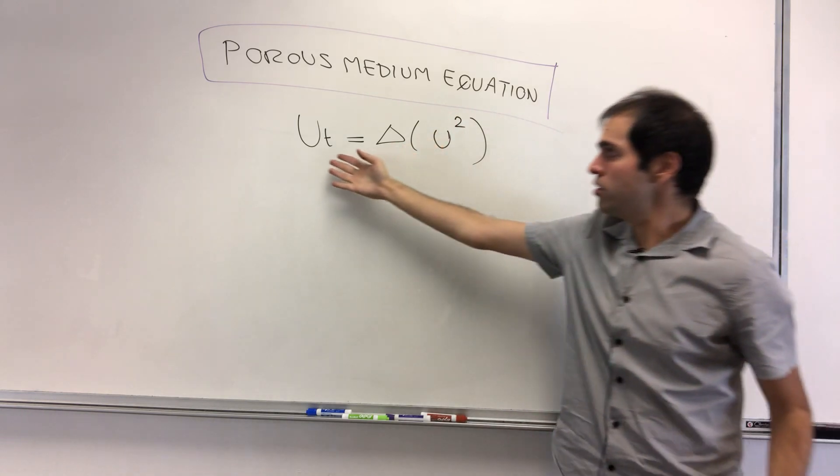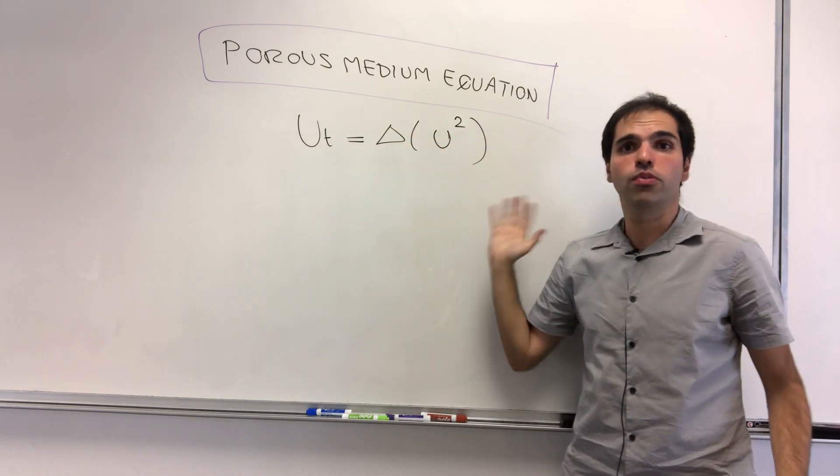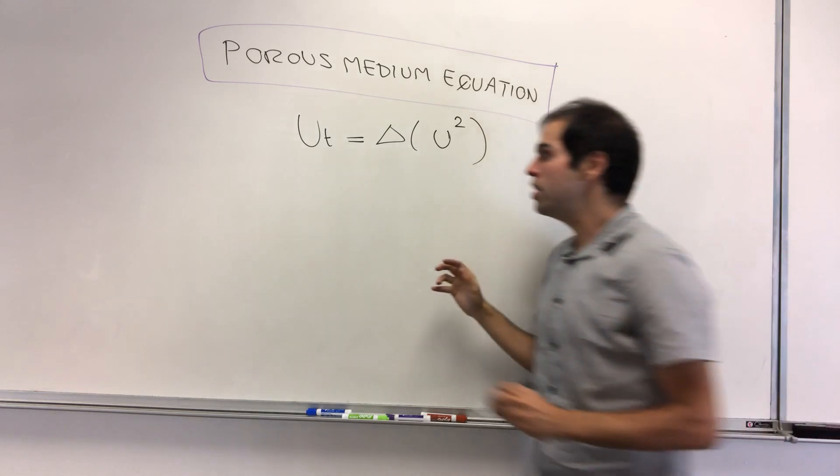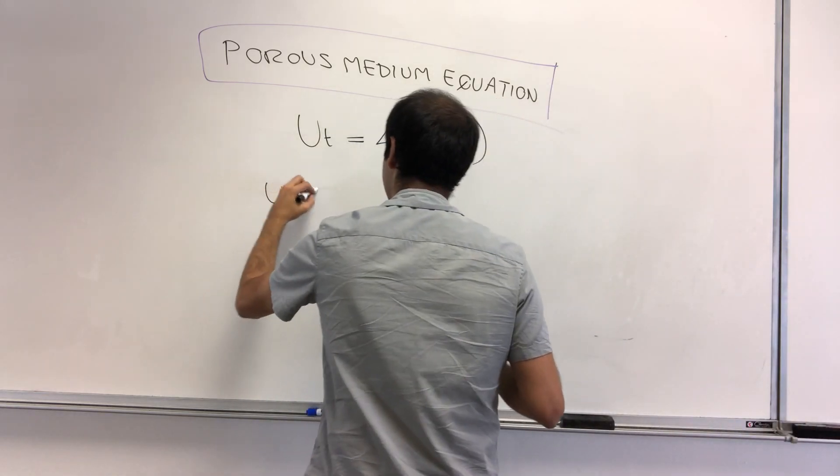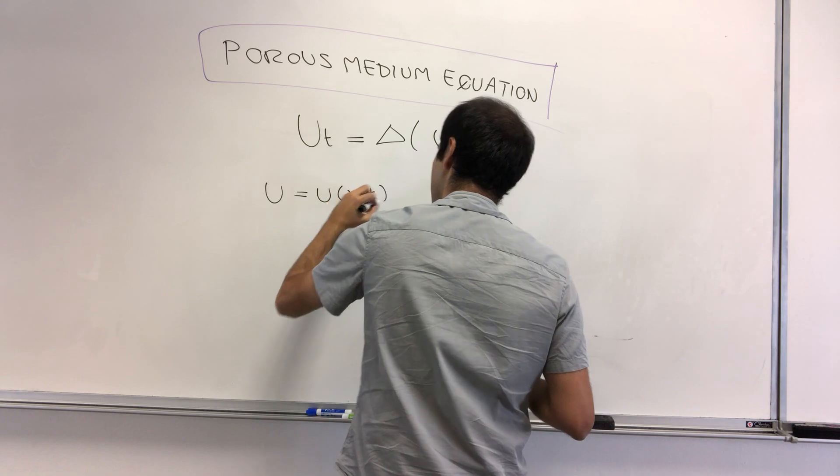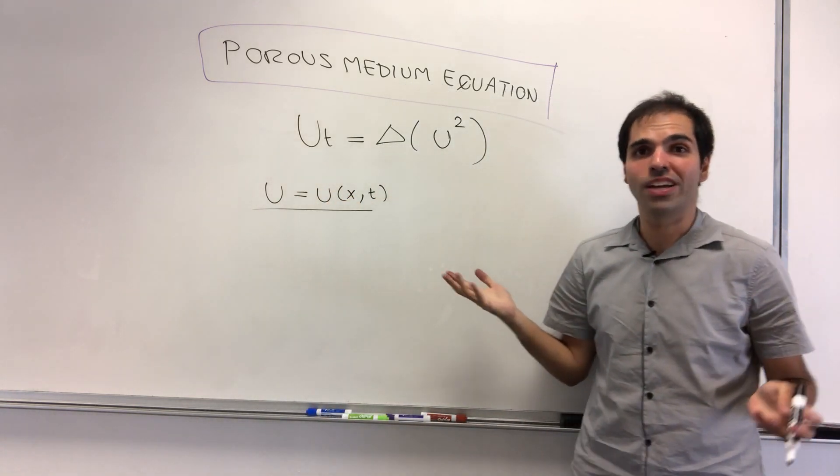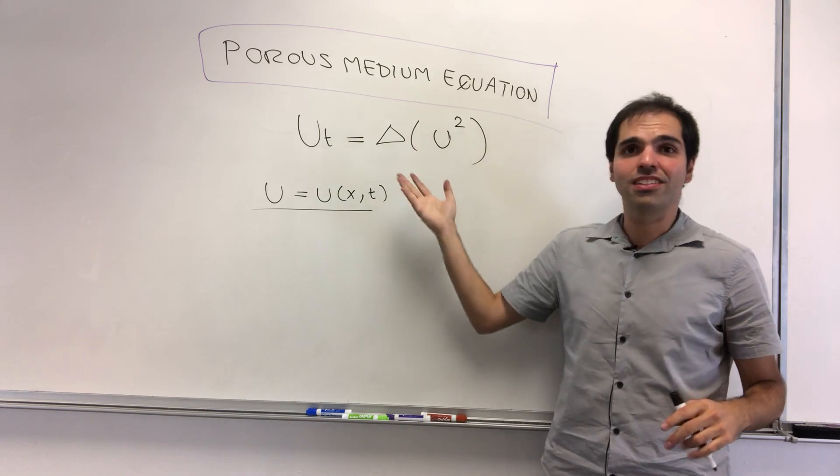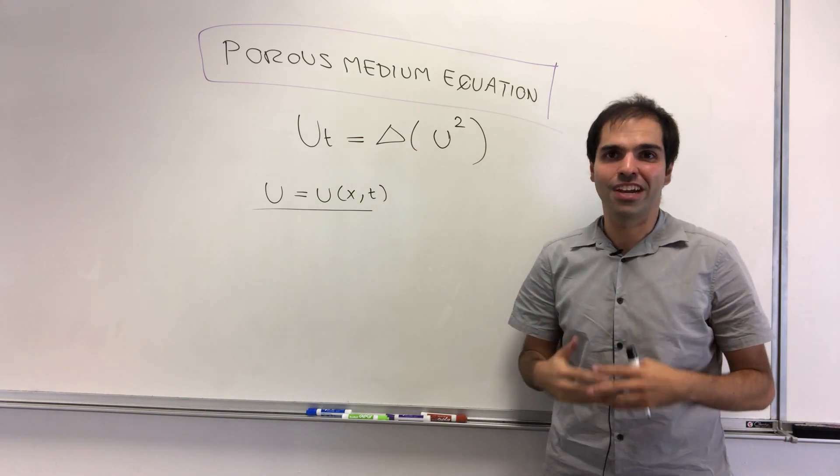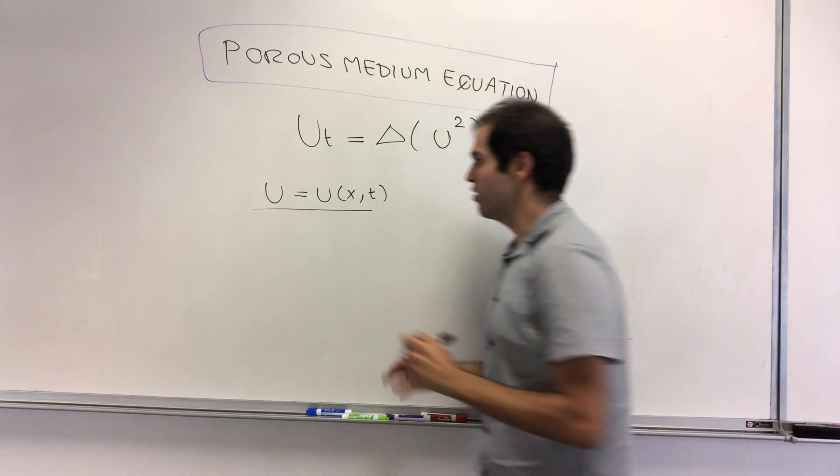OK. So now, let's solve ut equals Laplacian of u squared, where here, u is a function of x and t. And it turns out, just like the heat equation, this equation is very friendly with separation of variables. So let's separate out the variables.